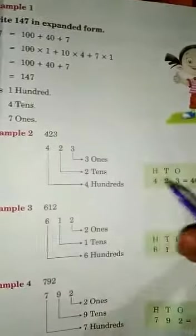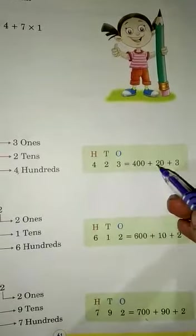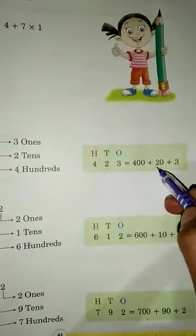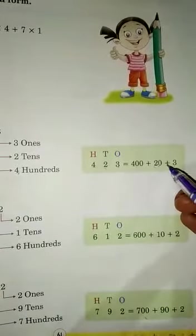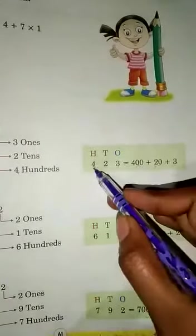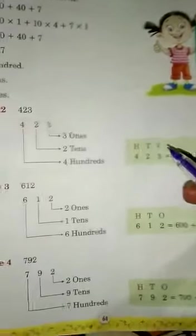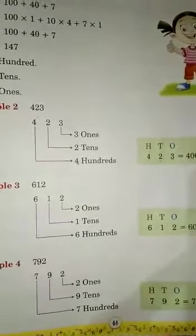So 423 means 400. See, 400 plus 20 because 2 is tens place. So 20 and 3 is in ones place. So 400 plus 20 plus 3. In this way, you have to do all question. Thank you.